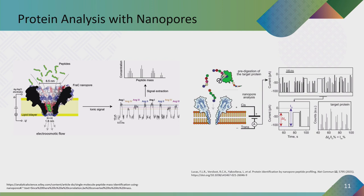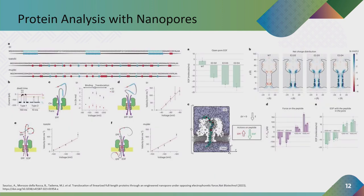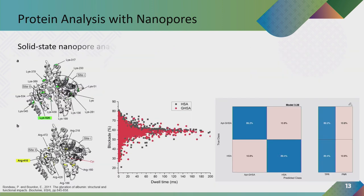After cutting the protein into peptides, data from all those segments can be combined to sequence the whole protein. In another study, researchers use a strategy to balance the electrophoretic force and electroosmotic flux so that they can translocate different kinds of proteins that have different charges on their surface — enabling sequencing of heterogeneous proteins.